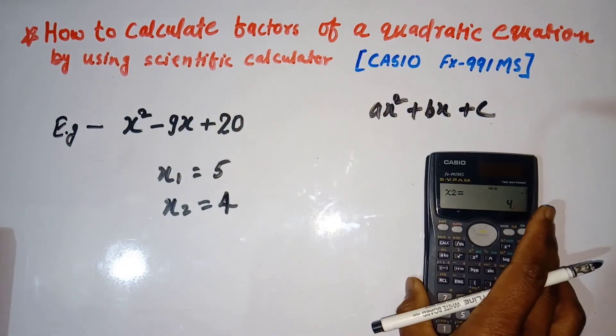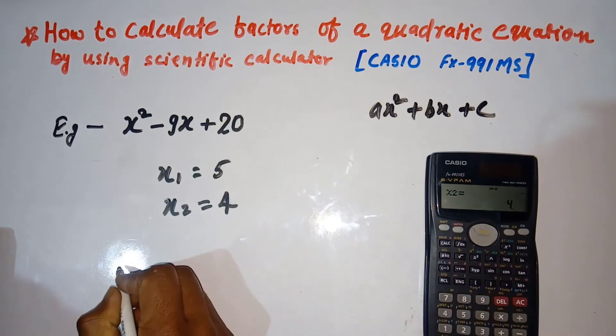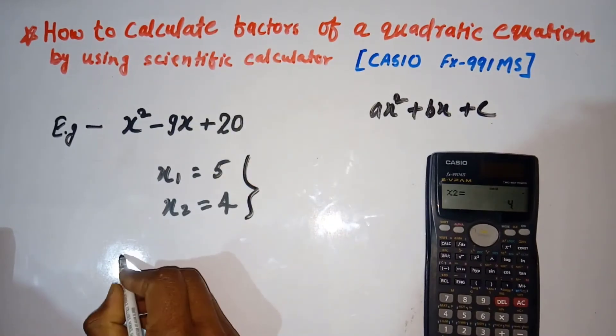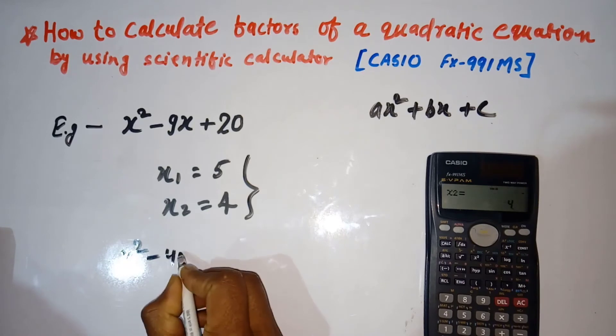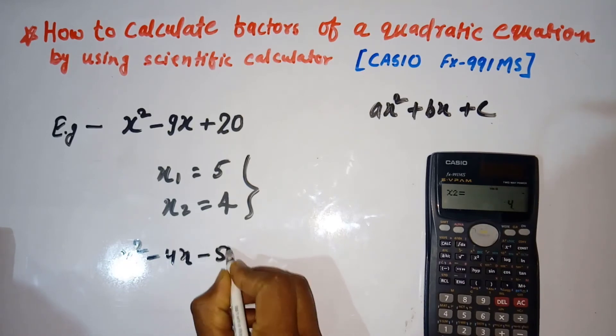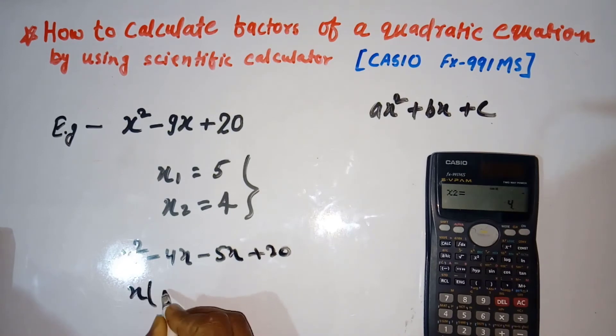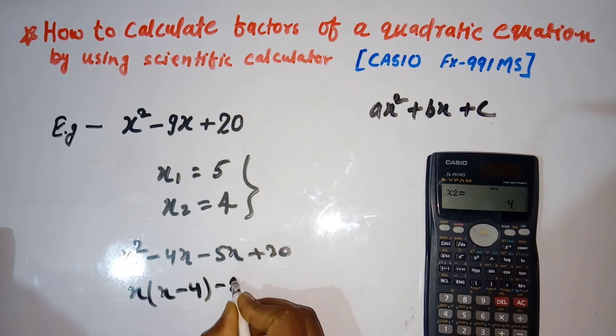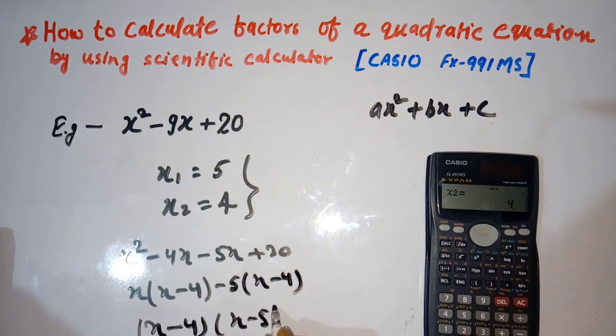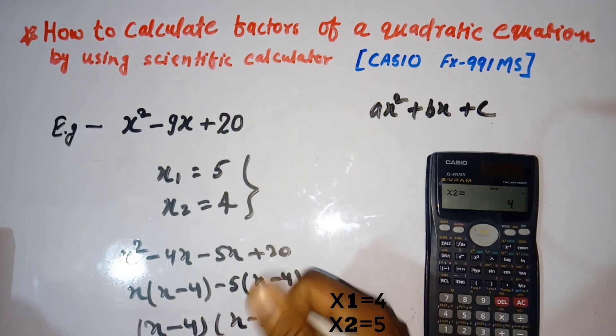Let's verify manually. x² - 4x - 5x + 20. Take x common: x(x - 4), take -5 common: -5(x - 4). You get (x - 4)(x - 5). This means x1 = 4 and x2 = 5. Thank you.